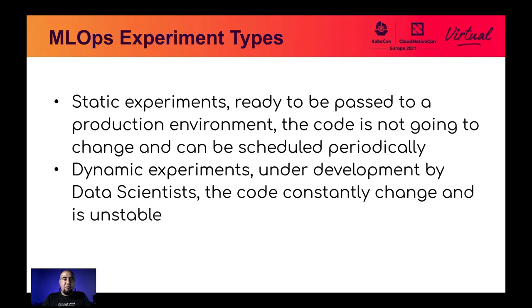There are two kinds of experiments. Static experiments are ready to be passed to production — the code is not going to change anymore, it's stable, and you might schedule them periodically: weekly, monthly, or yearly. Dynamic experiments are under development by data scientists — the code is constantly changing and unstable.